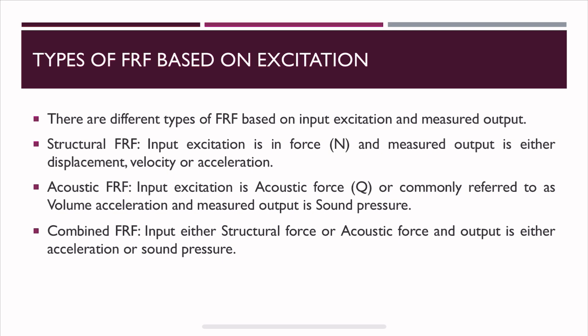There are different types of FRFs based on excitation. First is structural FRF, where the input excitation is structural force and the output is either displacement, velocity, or acceleration. The next is acoustic FRF, where the input is an acoustic force — a sound source commonly referred to as volume acceleration — and the measured output is sound pressure. Combined FRF uses either structural or acoustic force as input, with either acceleration or sound pressure as output.